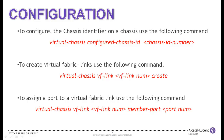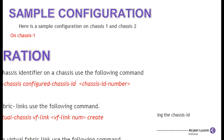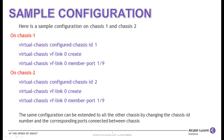To assign a port to a virtual fabric link, use the following command: virtual chassis vf link, followed by the virtual fabric link number, the keyword member port, followed by the port number. Here is a sample virtual chassis configuration example for chassis 1 and chassis 2. The same configuration can be extended to all the other chassis by changing the chassis identifier and the corresponding port connected between chassis.